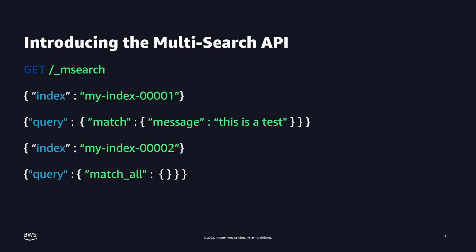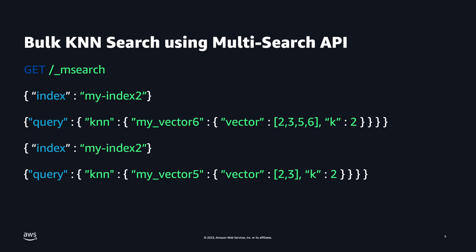This example highlights the power of the mSearch feature for bulk k-nearest neighbors, also known as KNN search. KNN enables users to find the k-nearest neighbors to a query point in a vector index. By utilizing the mSearch endpoint, we bundle multiple KNN search requests into a single API call. Customization options include the vector field, query vector, and number of nearest neighbors. Optimize your search process with mSearch, achieving faster results and reduced overhead. The API response includes results from each KNN query.